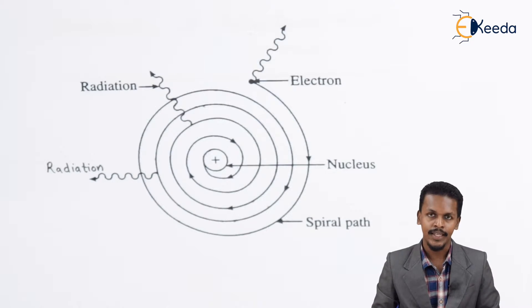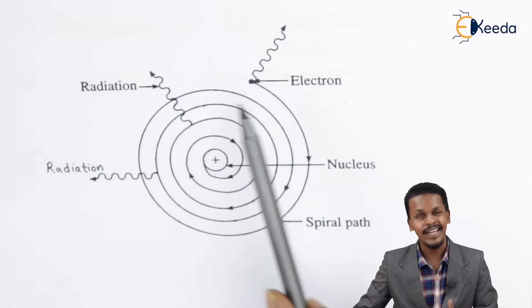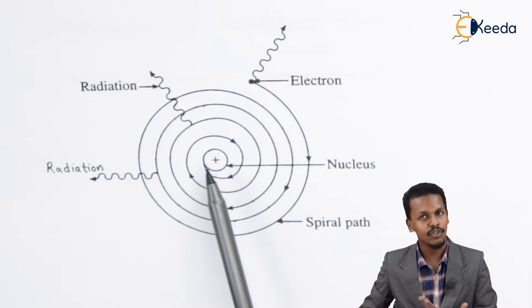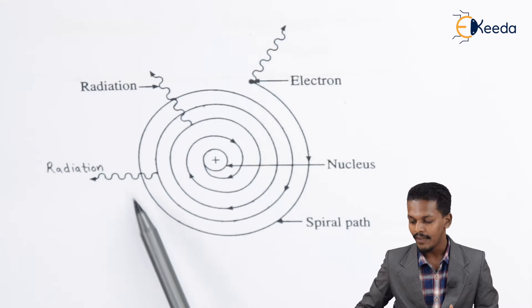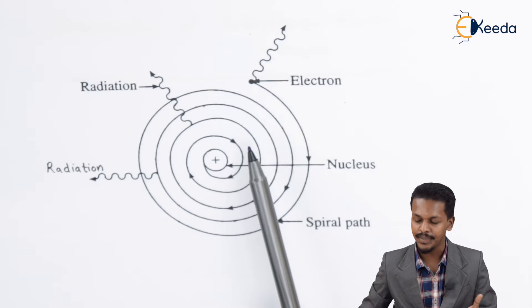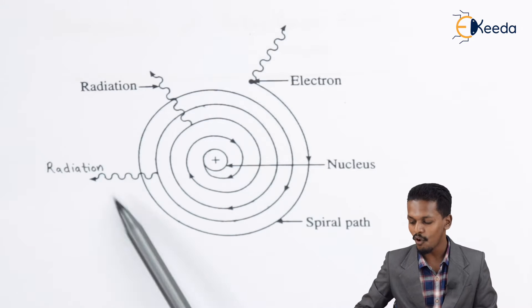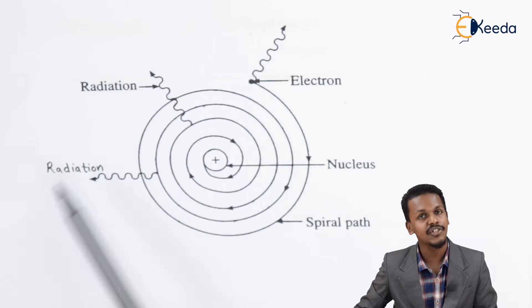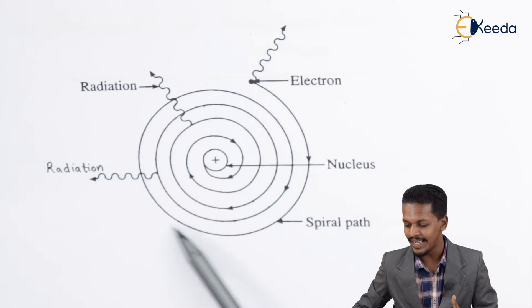According to classical electromagnetic theory, if an electron or particle is revolving around its opposite charge, in this case the electron revolving around a proton present in the nucleus, then whenever a particle is revolving it will radiate energy. So according to the Rutherford model, the electron revolving around the nucleus should emit radiation.